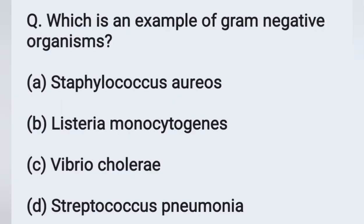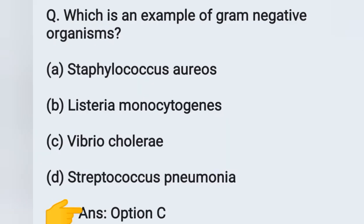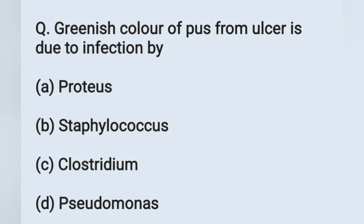The next question: Which is an example of a gram negative organism? Options: option A: Staphylococcus aureus, option B: Listeria monocytogenes, option C: Vibrio cholerae, option D: Streptococcus pneumoniae. Vibrio cholerae is a gram negative organism. Option C is the correct answer.